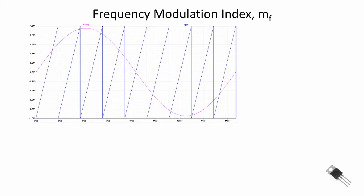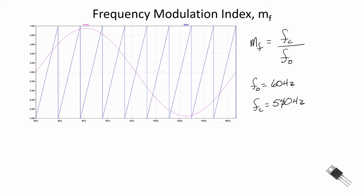Now let's talk about the frequency modulation index M sub f. M sub f is defined as the frequency of our carrier divided by our reference signal frequency — I'll title our reference signal f sub zero. In this example, f sub zero equals 60 Hz and our carrier frequency is equal to 540 Hz, so our frequency modulation index equals 540 Hz divided by 60 Hz.